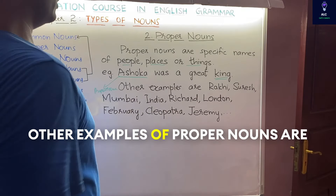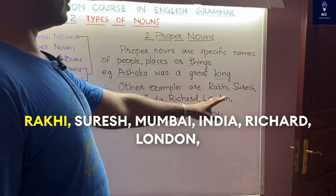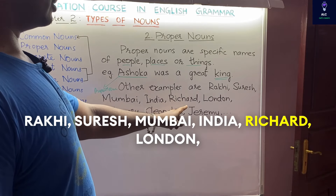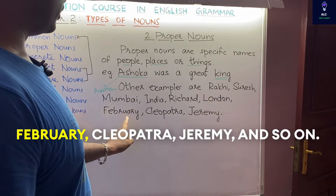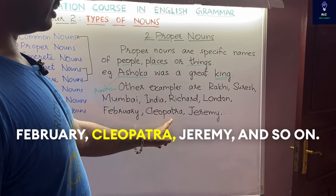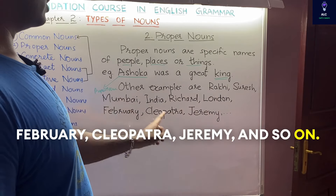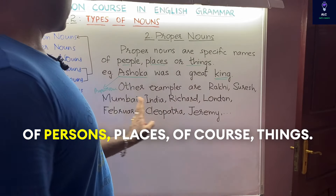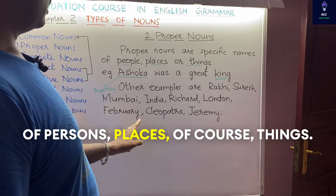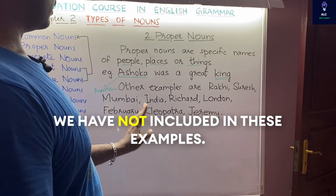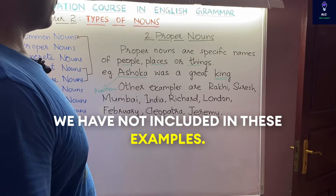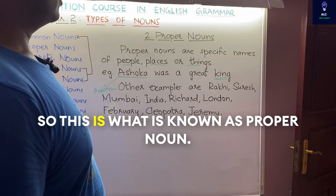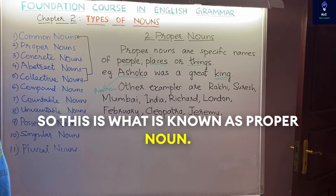Other examples of proper nouns are Rakhi, Suresh, Mumbai, India, Richard, London, February, Cleopatra, Jeremy, and so on. These are the specific names of persons and places. This is what is known as a proper noun.